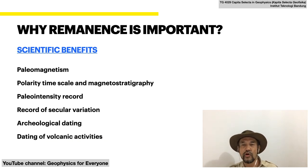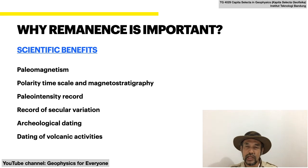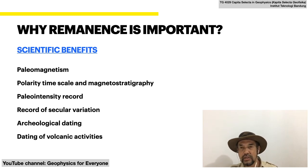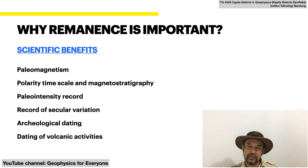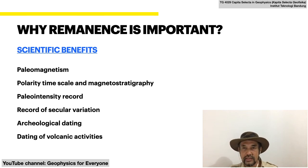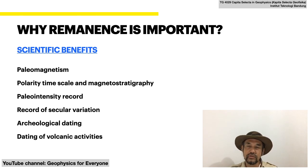So why is remanence important? There are significant scientific benefits. For instance, there is a science called paleomagnetism, which looks at the magnetic remanence recorded in rocks that formed many millions of years ago — these rocks record the positions of their formation. There is also the polarity timescale and magnetostratigraphy: the Earth's magnetic field can experience reversals, and scientists have determined the dates of these reversals, which can be used as a stratigraphic tool.